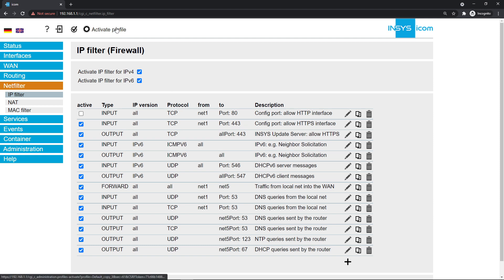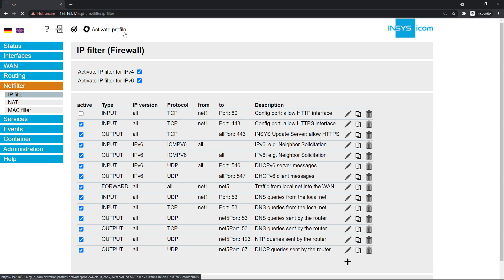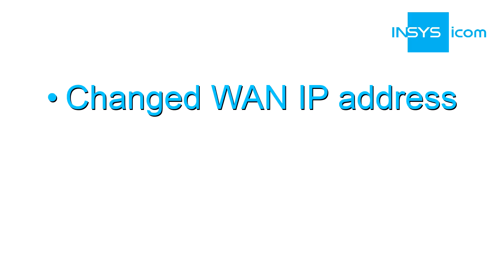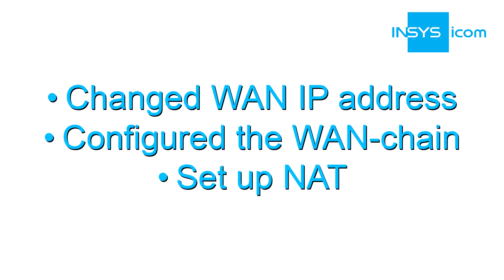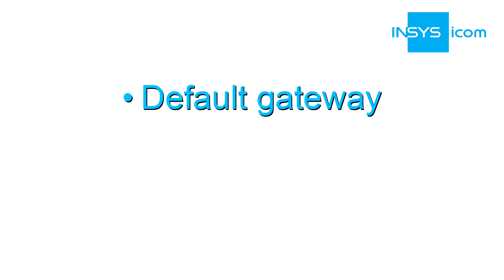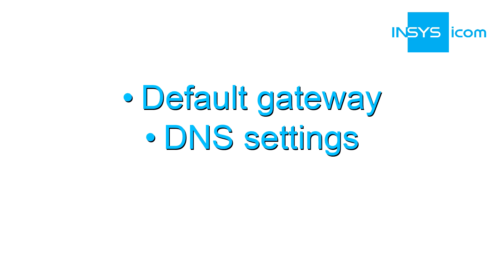As a final step, click on activate profile in the upper left corner. This overtakes and activates every setting that we've created in the last few minutes. Your internet connection should be up and running. To summarize what we configured today: we changed the IP address of the interface, put it in a WAN chain, and masked its IP address using a NAT rule. We also configured a static gateway address for the interface, gave the router a DNS address, and last we configured the firewall.